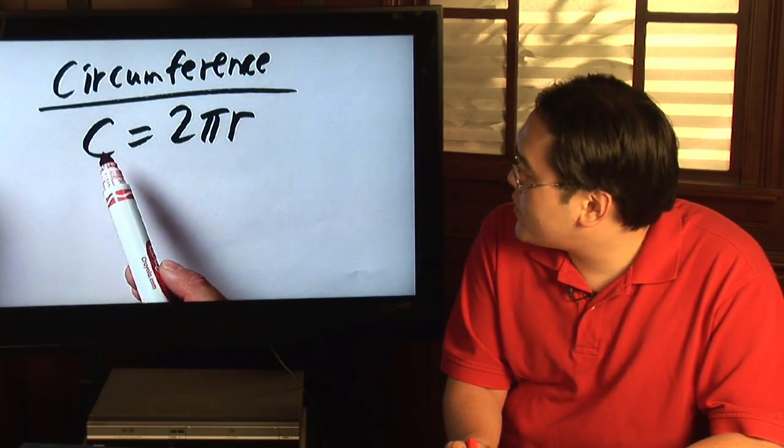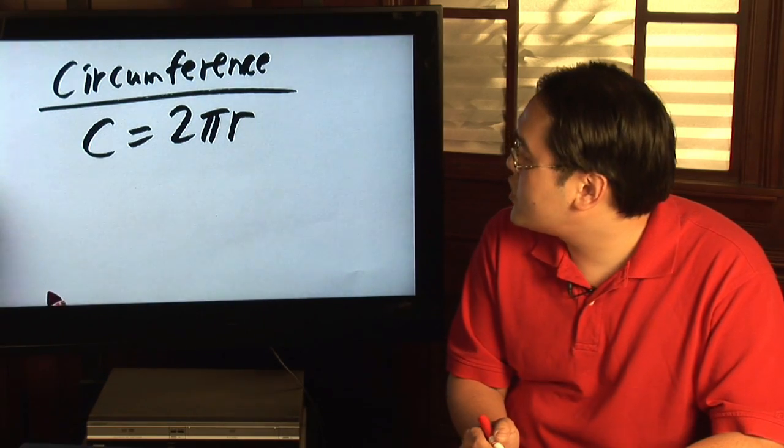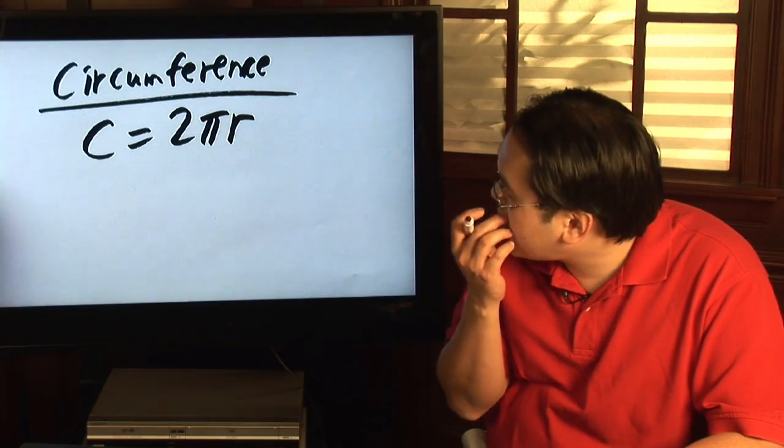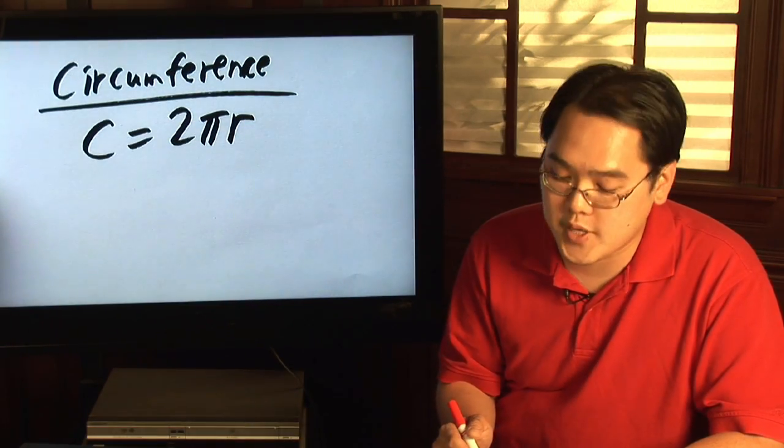Now the circumference of a circle is fairly straightforward. It's 2 times pi, which is that famous number 3.14 approximately, times r, which is the radius of a circle.